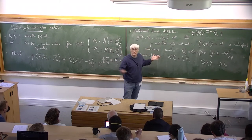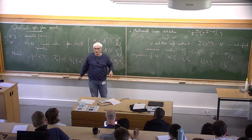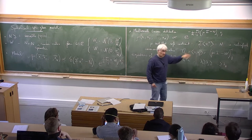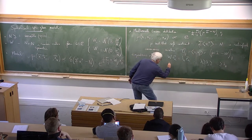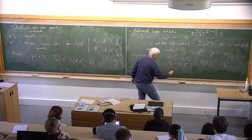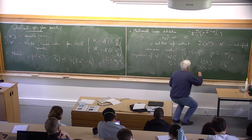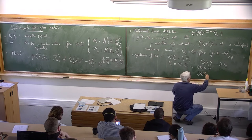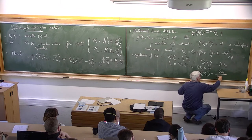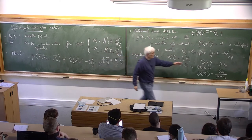Going to the eigenbasis: I compute x̃_a, the projection of x onto e_a. The statistics are such that the average of x̃_a is zero, the second moments are diagonal, and the second moment is simply 1 over (mu minus lambda_a). You can read this immediately from the formula — the denominator is mu minus lambda_a.